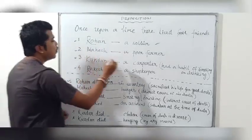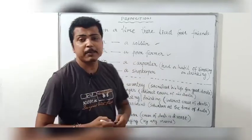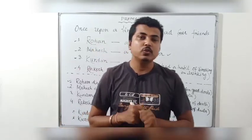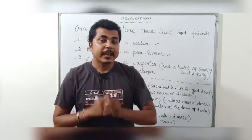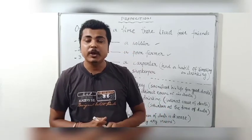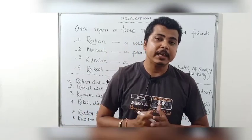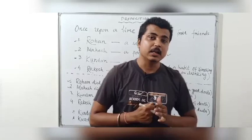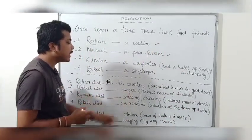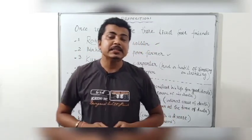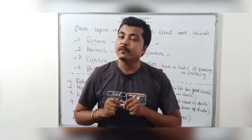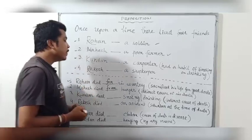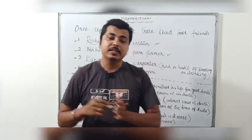Next, number two — Mahesh, who was a poor farmer, did not have food to eat and could not grow any crops. He cannot live for a long time because everyone needs food to live. Since he could not grow crops, he died of hunger. Now, hunger is an indirect cause of death — it is not a direct cause of death. So in that case, we use: Mahesh died from hunger. 'From' is used when the cause of death is indirect.